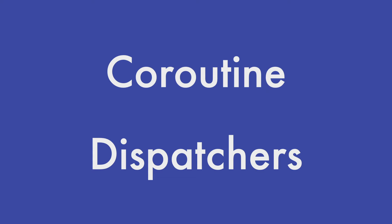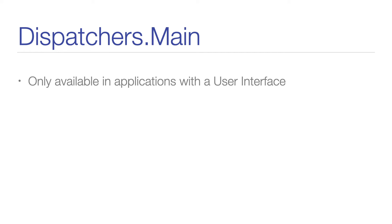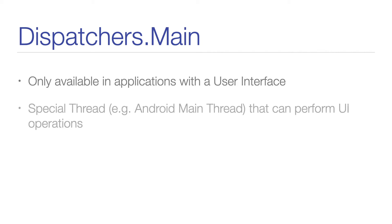Let's start with the dispatcher we are already pretty familiar with, and this one is the main dispatcher. The main dispatcher is only available in applications that have some form of user interface, like an Android application or a Java Swing application. So you won't find this dispatcher in backend applications. In UI applications, there is usually only one special thread, like the Android main thread, that is allowed to perform operations on the user interface.